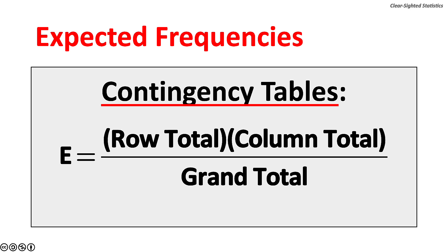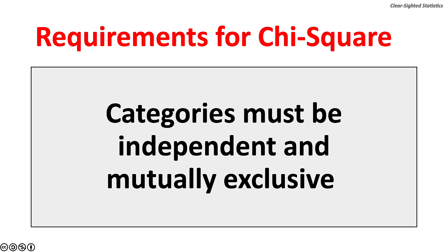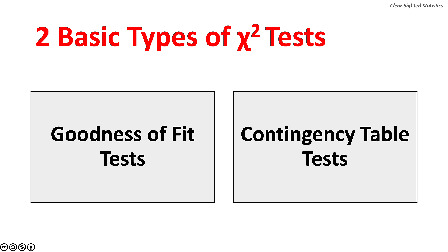Requirements for Chi-square tests: the categories must be independent and mutually exclusive. Expected frequencies for each category must be at least five observations. When this requirement cannot be met, some categories must be combined — however, there must be more than two categories to do this. There are two basic types of Chi-square tests: goodness-of-fit tests and contingency table tests.